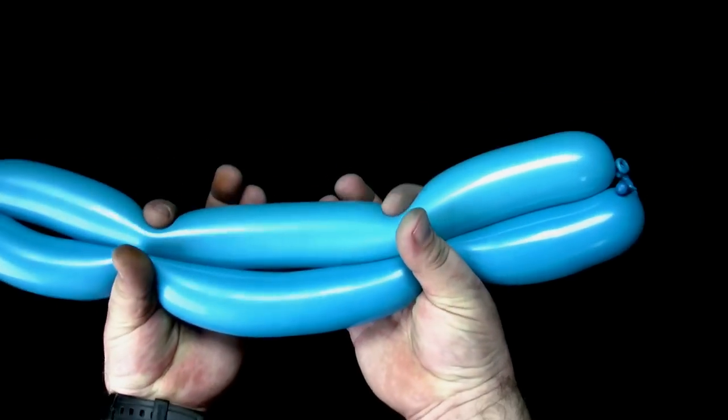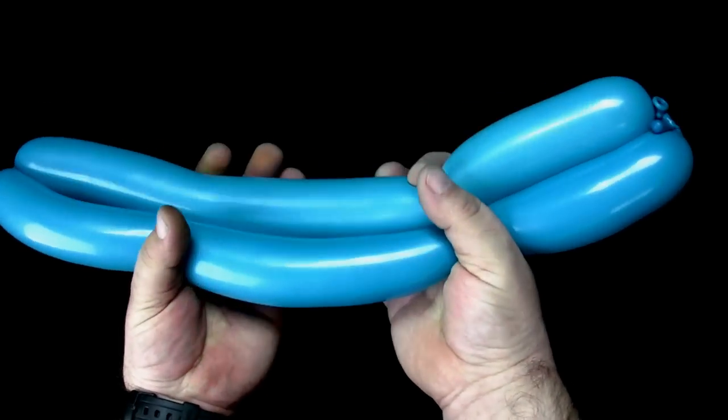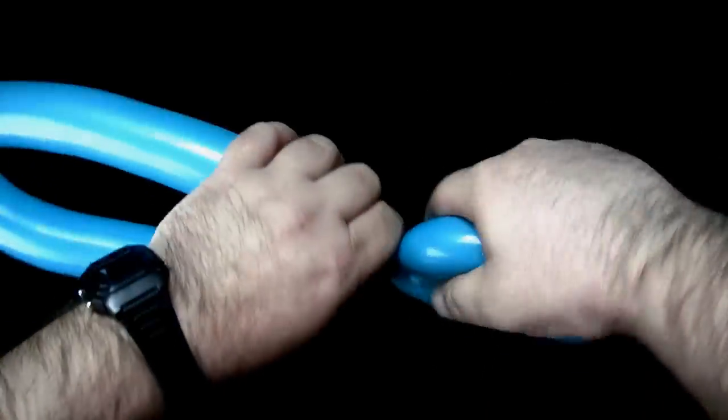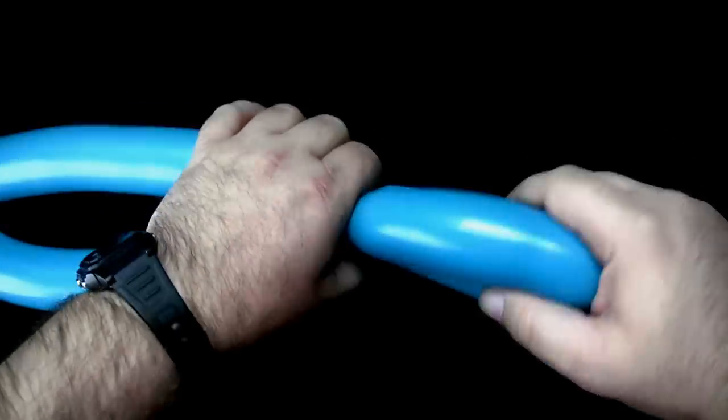Now divide the two bubbles into thirds and lock twist the balloon at these points, creating six bubbles of equal size.